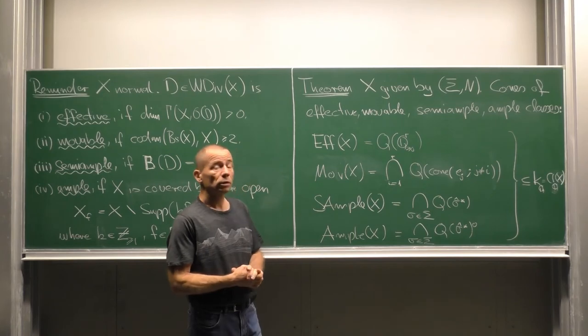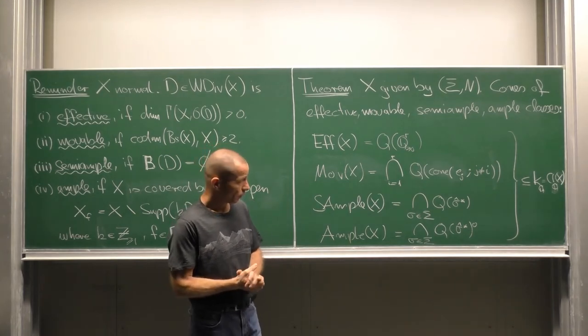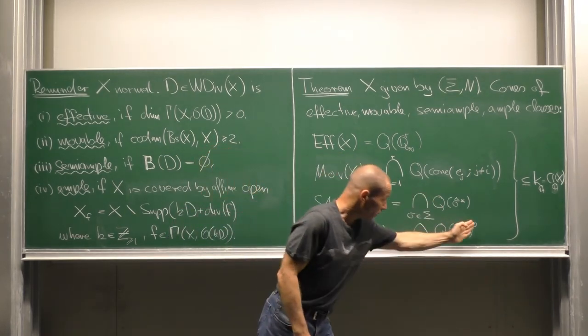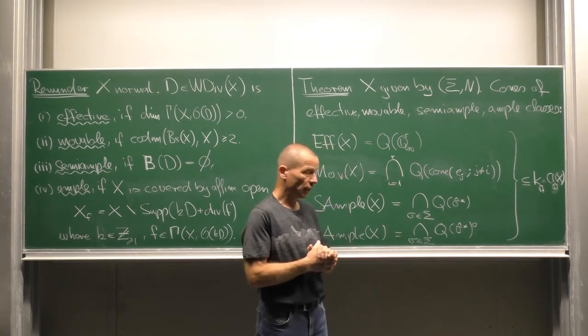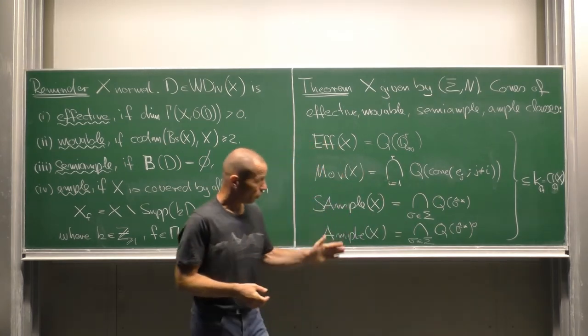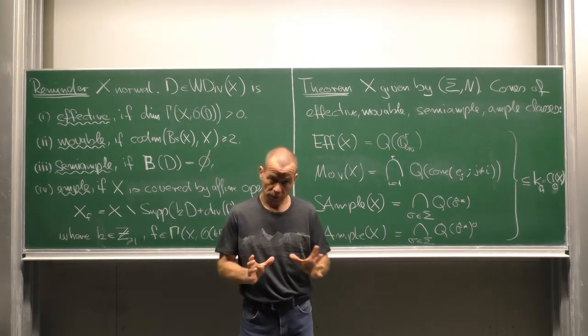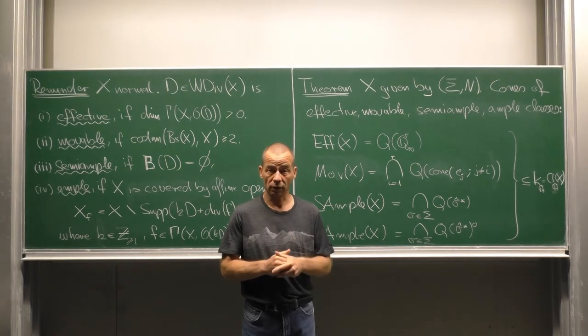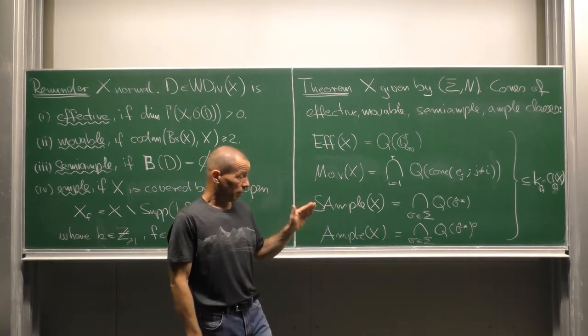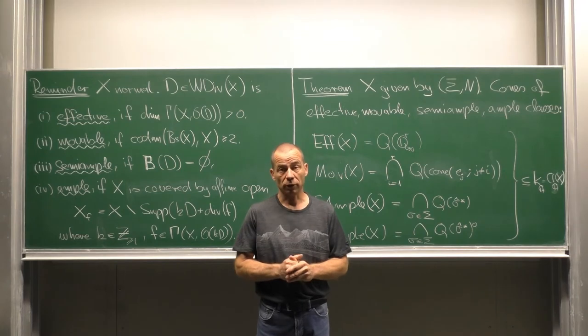Finally, the ample cone is the intersection over all relative interiors of the images q of sigma hat star. Observe that in the last case we do not have a polyhedral cone. This is rather an open cone. In particular it can happen that this cone is empty.